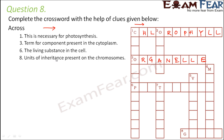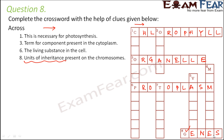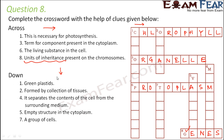Number six across: 'the living substance in the cell' — inside the cell we have the cytoplasm, and the nucleus. The nucleus and cytoplasm together are called protoplasm, so the answer is protoplasm. Number eight across: 'units of inheritance present on the chromosomes' — the units that carry traits from one generation to another are genes, so the answer is genes.